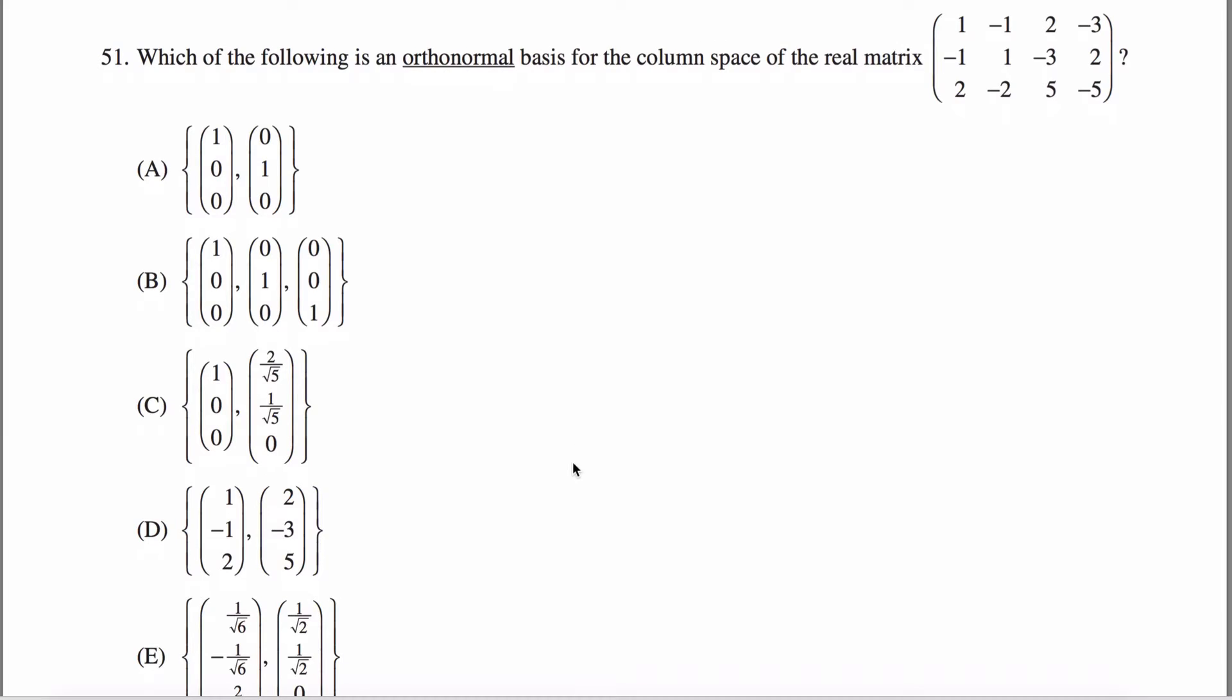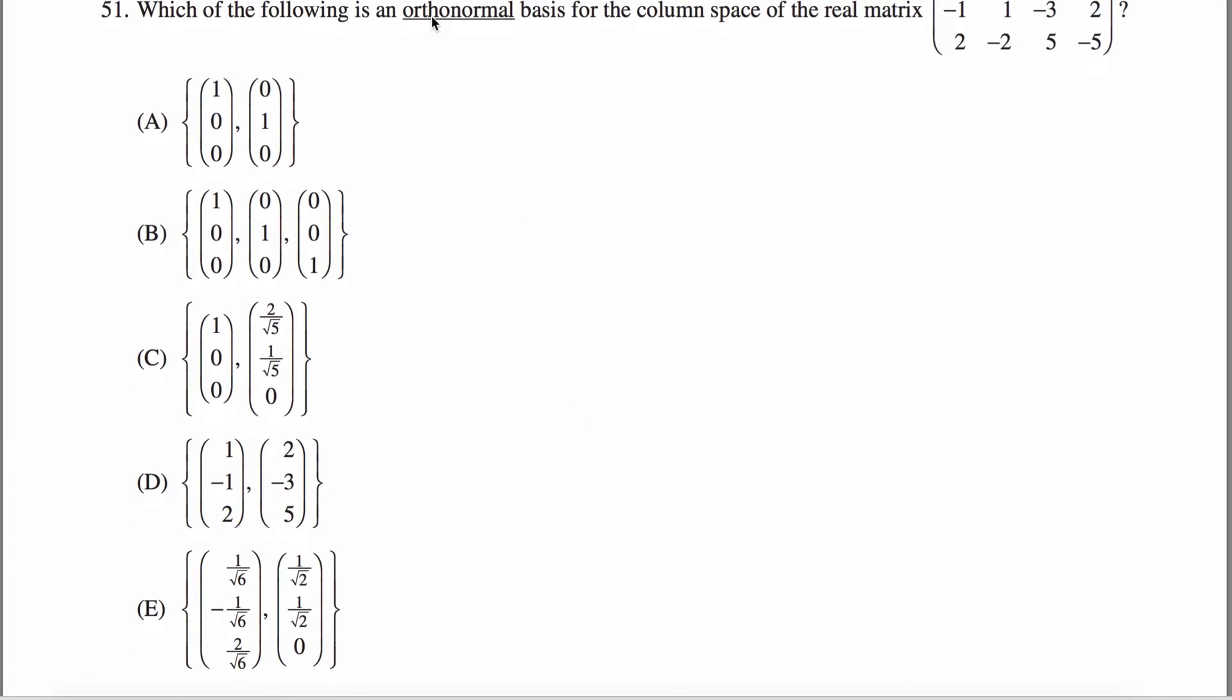Well, before we even start, we can eliminate a couple possibilities. Orthonormal - the ortho part tells you that the vectors have to be orthogonal to each other. In other words, their dot product is zero. If I were to dot product this, that'd be zero as well.